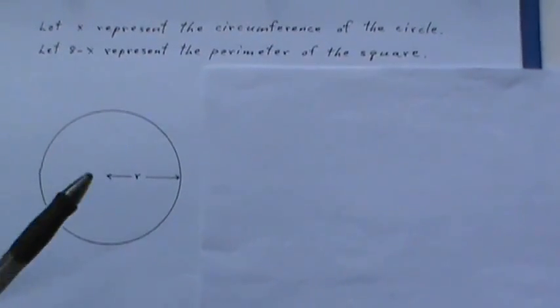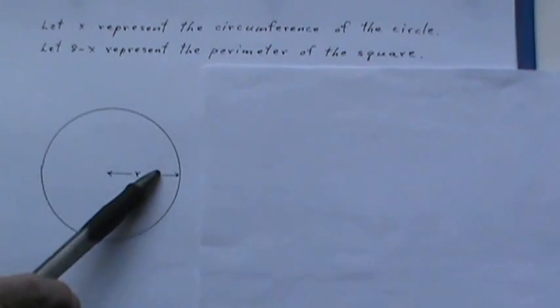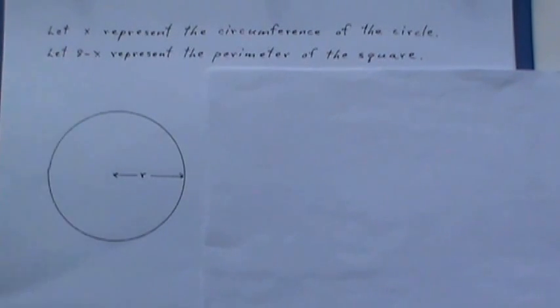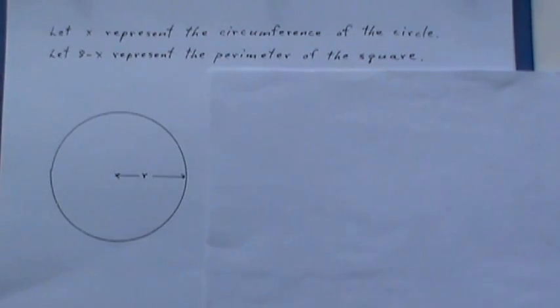Now we'll start off by letting X represent the circumference of the circle and then the remainder which I represent by 8 minus X will represent the perimeter of the square.